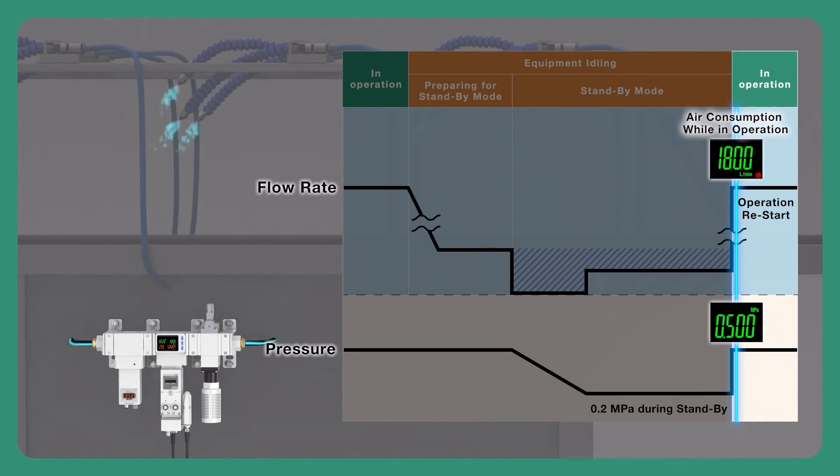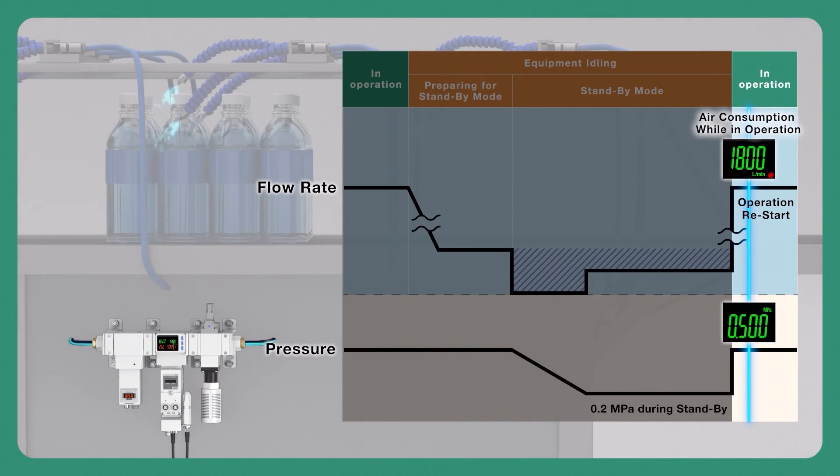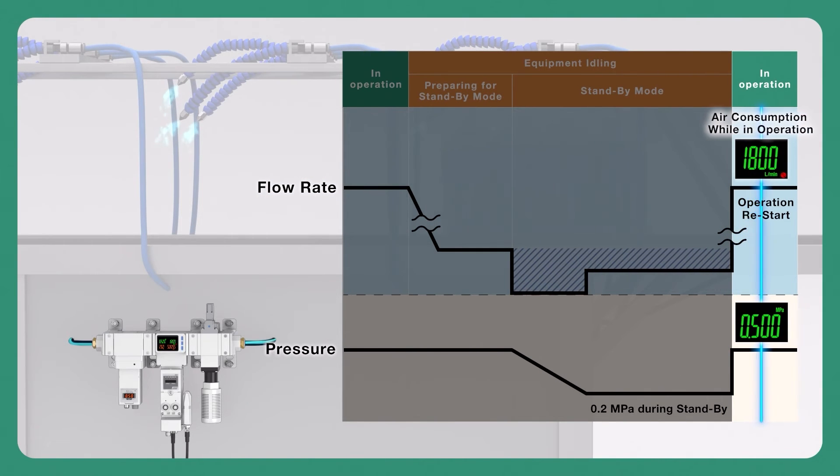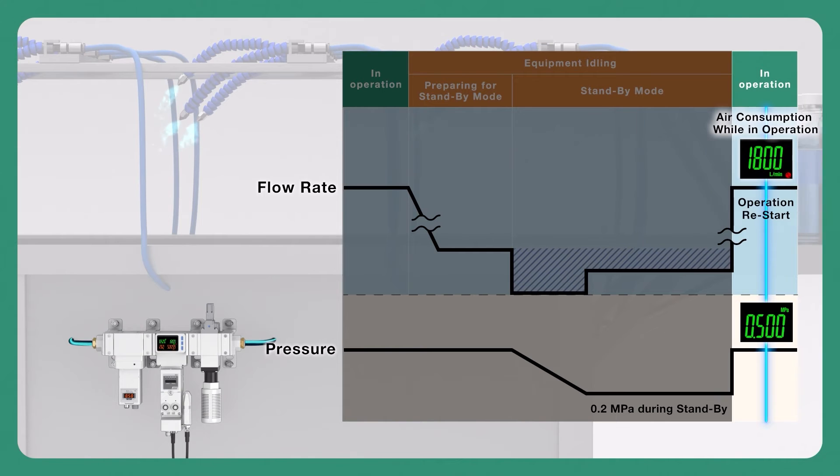When the standby signal is removed, the air management system goes back to its operation mode and increases pressure back to normal levels.